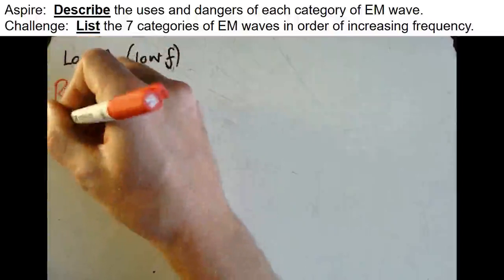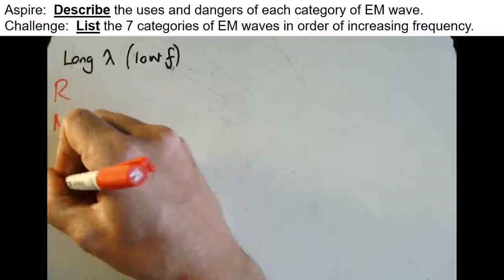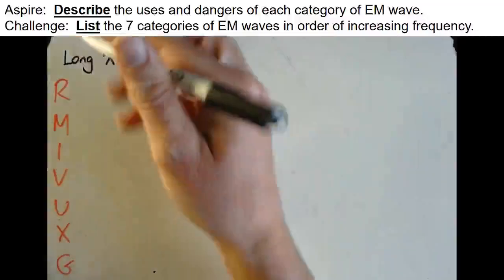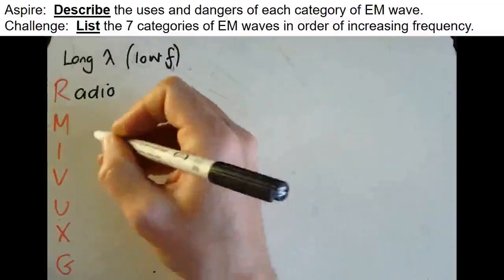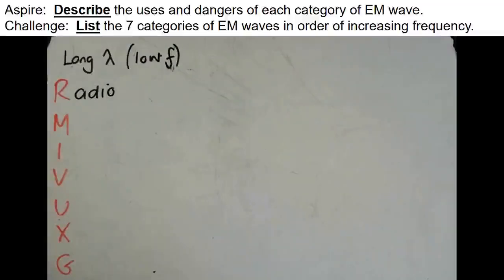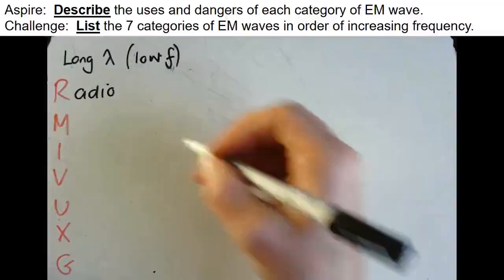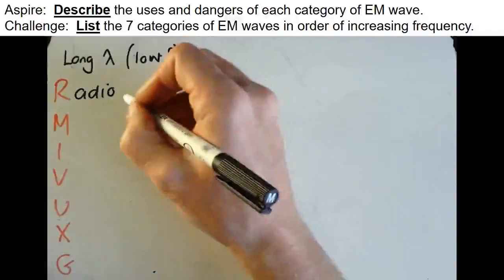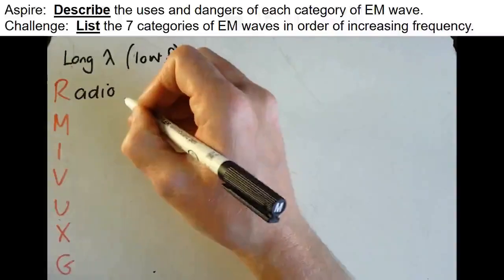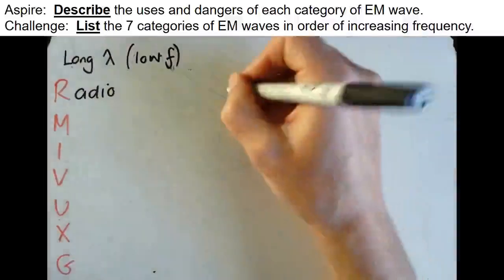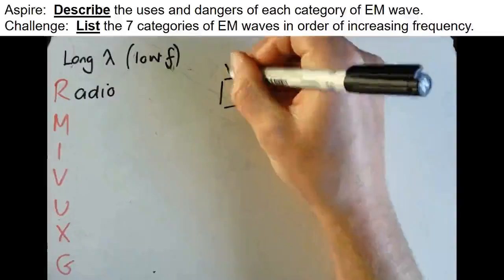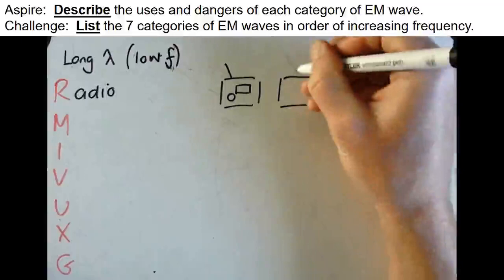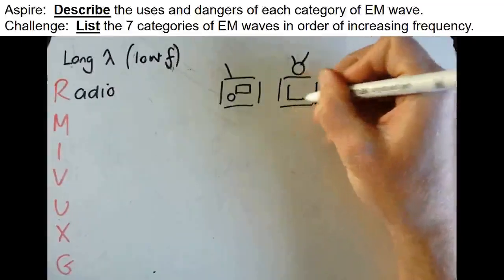Using my memory aid — 'rich men in Vegas use x-ray glasses' — the R is radio waves. Radio waves have the longest wavelength. What radio waves do is they're used for communication: they're used for radio communication and for TV aerial communication.